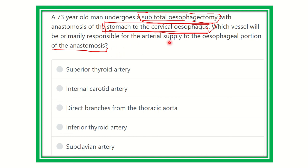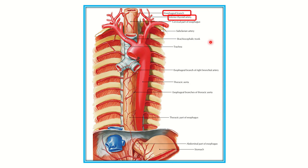In this picture we can see the esophagus and its different parts with blood supply. This is the cervical part, thoracic part, and abdominal part. In the abdominal part, the esophagus receives blood supply from the esophageal branch of the left gastric artery, which supplies the abdominal esophagus.